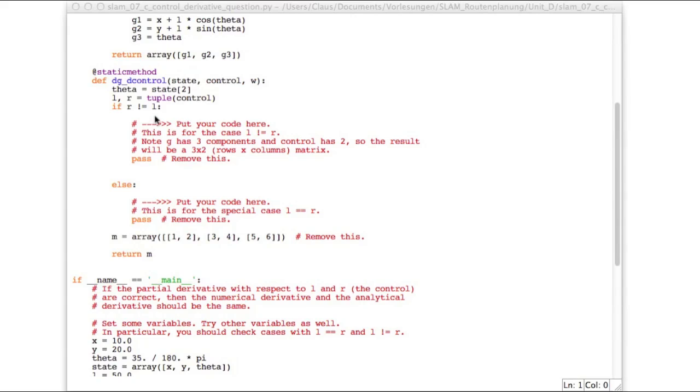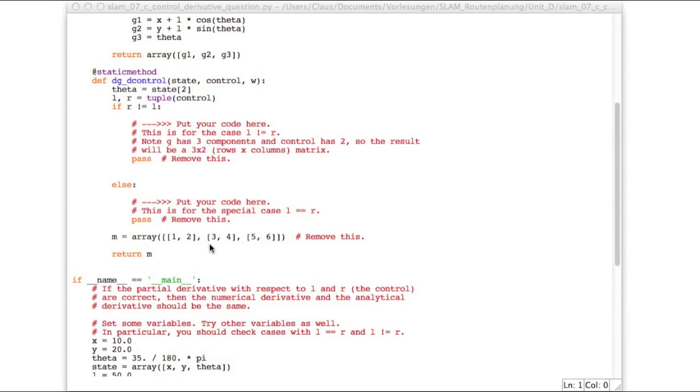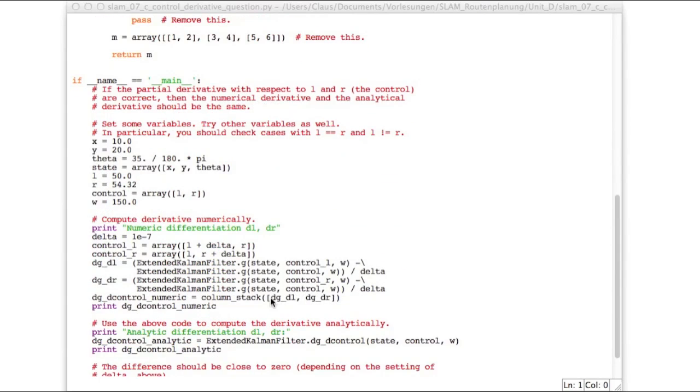Again there's two cases for r not equal to l and for r equal to l and you'll have to return a matrix which is three rows times two columns. And down here in the main function everything is set up as in the previous case. This time the numeric differentiation is with respect to l and r and it will compare this to your analytic solution and it will print out the difference. So now please program this.